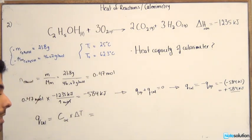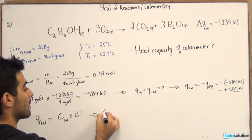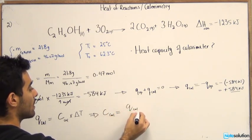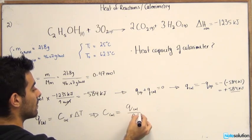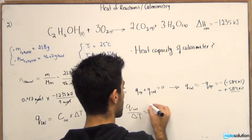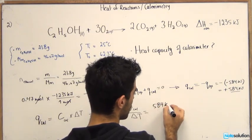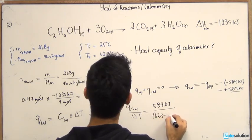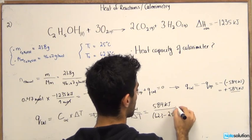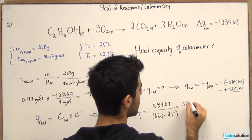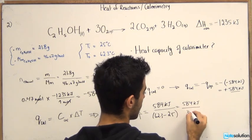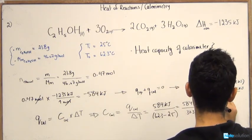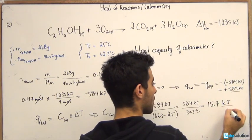So if we go on and solve this problem, the C calorimeter, which is specific heat, is equal to Q of the calorimeter over delta T. So the Q calorimeter is equal to 584 kilojoules, and delta T would be 62.3 minus 25. This means it's 584 kilojoules over 37.3 degrees Celsius. That would give you 15.7 kilojoules per Celsius.